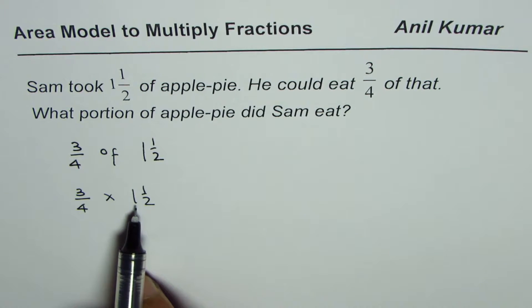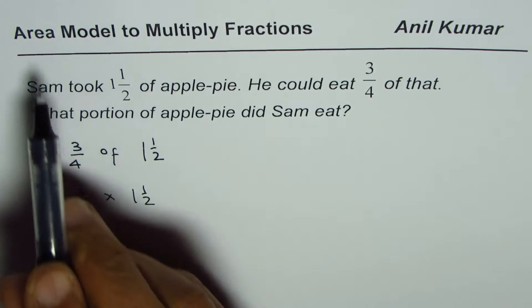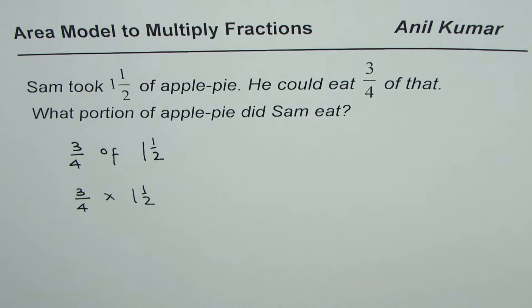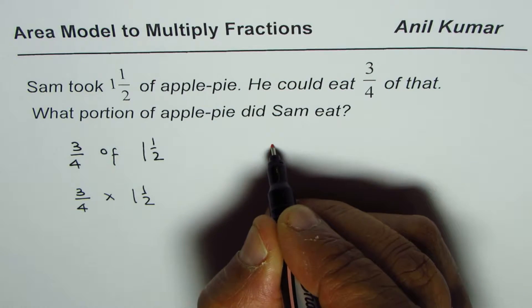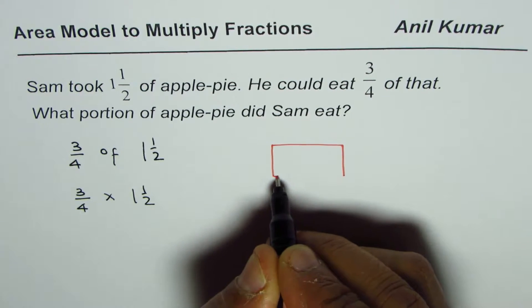How do we do it? We'll do it this time with area model. So let me sketch one and a half first. Let us say this represents one apple pie and this is another one.